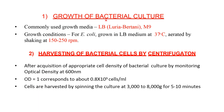Bacteria are usually grown in LB medium or M9 medium. For E. coli, they are grown in LB medium at 37 degrees centigrade, aerated by shaking at 150 to 250 rpm. Harvesting of bacterial cells is done by centrifugation after acquiring appropriate cell density, monitored by optical density at 600 nanometers. An OD of 1 corresponds to about 0.8 × 10⁹ cells per ml.